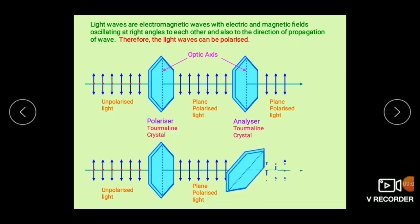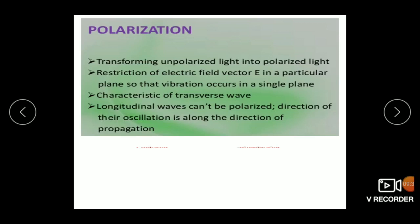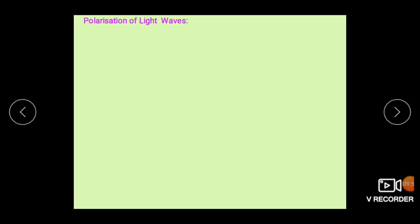If we rotate the analyzer, there is an angle at which no light is transmitted, as both axes become perpendicular to each other. Polarization is possible for transverse waves such as light waves, but not for sound waves because sound waves are longitudinal waves whose direction of oscillation is along the direction of propagation.